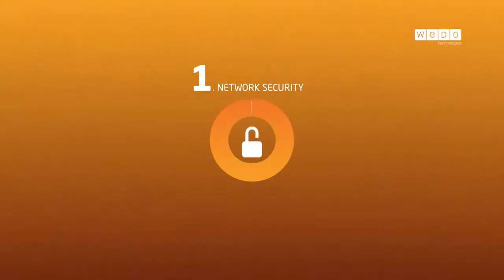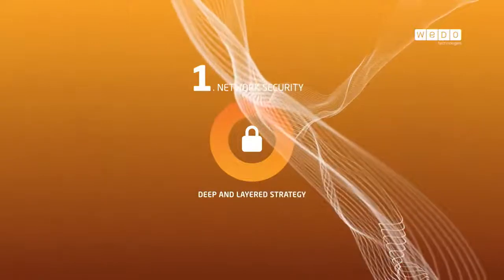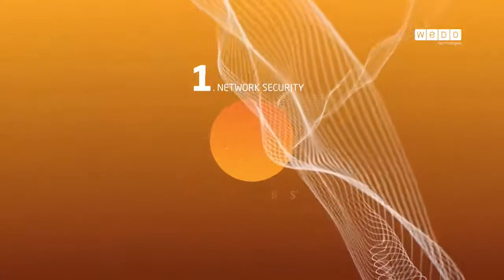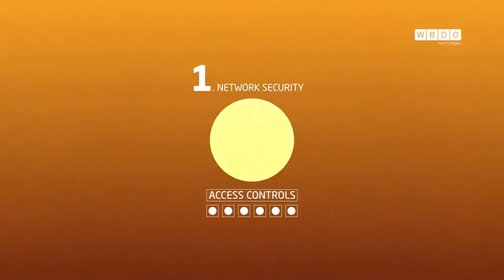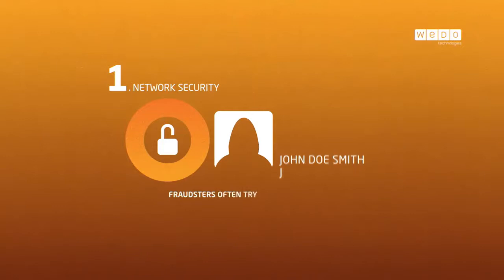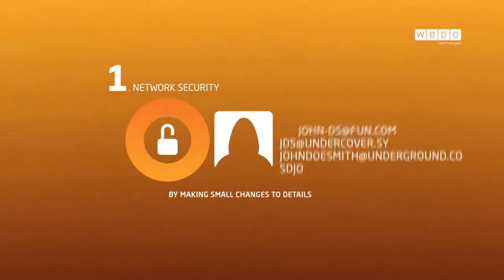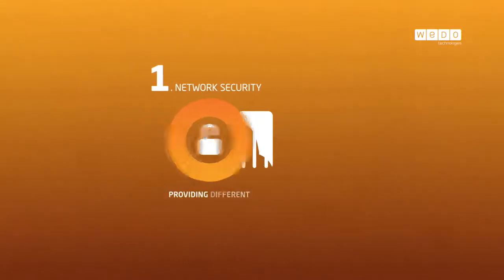Step 1: Network Security. It is vital to counter fraudsters through a deep and layered strategy that involves both detection and prevention. CSPs must make access controls as effective as possible. We know that fraudsters often try to evade simple checks by making small changes to details such as the spelling of their name or providing different middle initials.